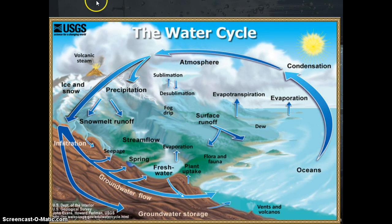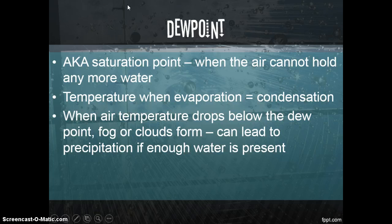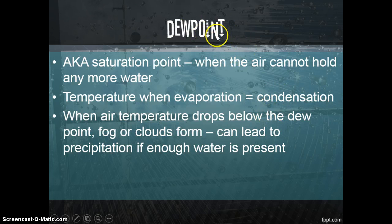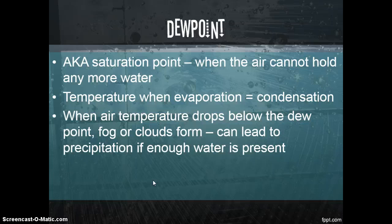Now let's talk about what happens to water after it evaporates and condenses into clouds — you will see precipitation happening. One important concept is the dew point, also called the saturation point. This is the point when the air is holding its maximum amount of water and can't hold any more — at this point, evaporation rate equals condensation rate. If the air temperature drops below this point, the water will start to condense and you'll get either fog or clouds, depending on altitude: clouds form up high, fog forms closer to the ground.